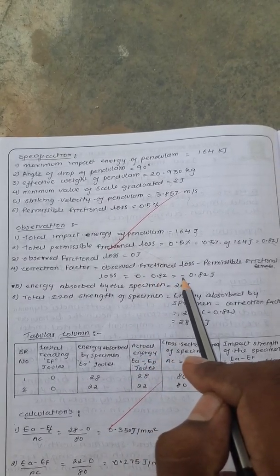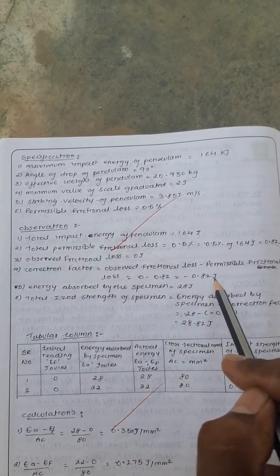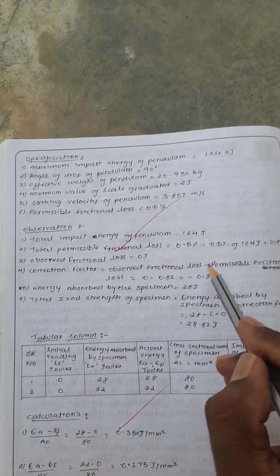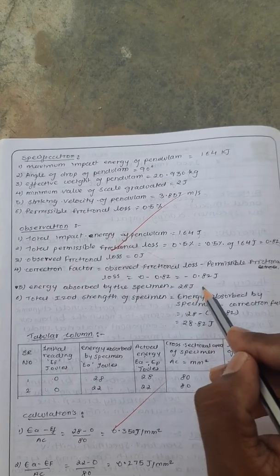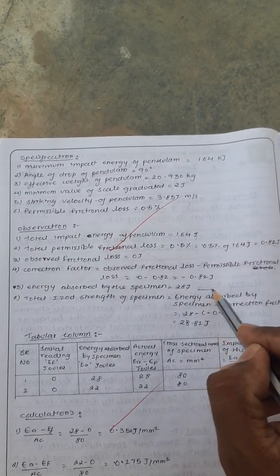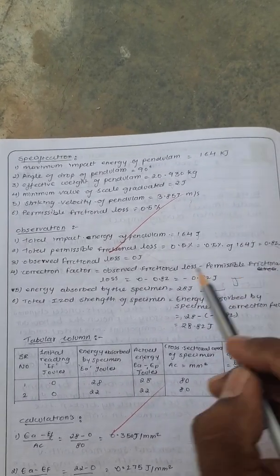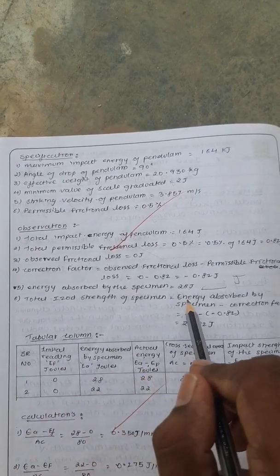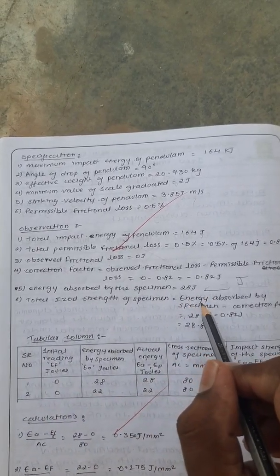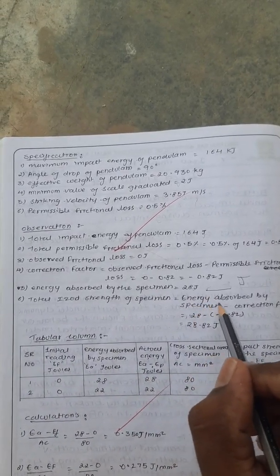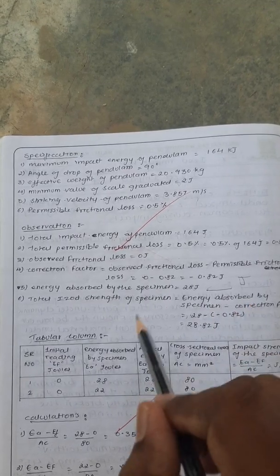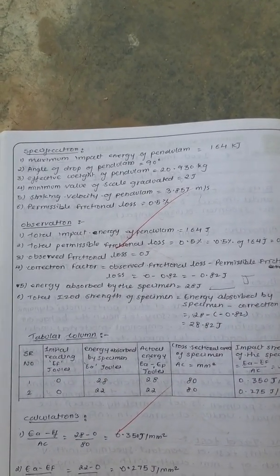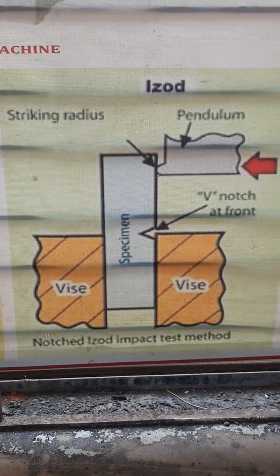Correction factor equals friction loss minus permissible friction loss, which is 0.0 minus 0.82, giving minus 0.82 joules. Next, energy absorbed by the specimen will be determined after conducting the experiment. The total ISO strength of the specimen equals energy absorbed minus correction factor.